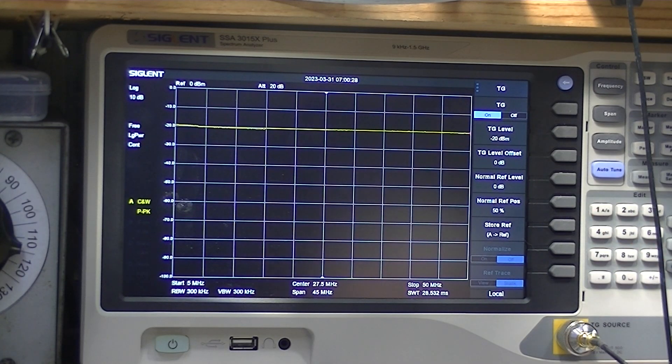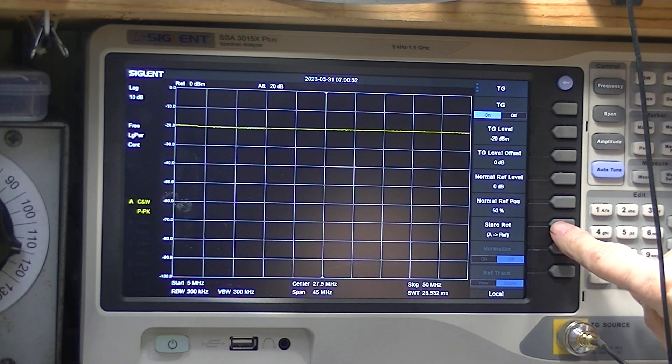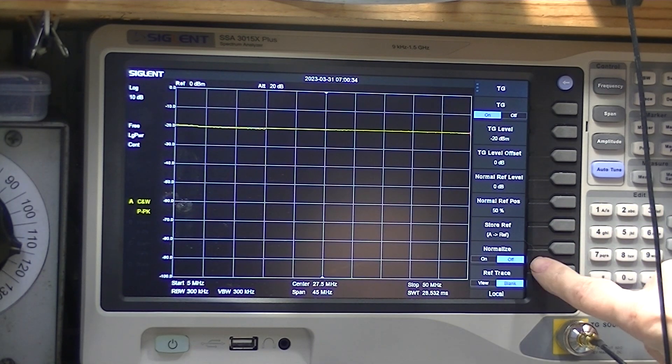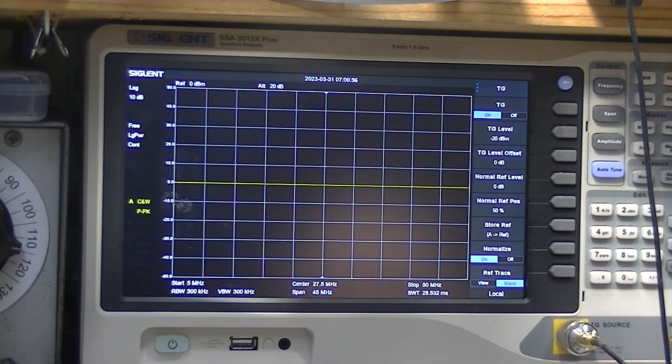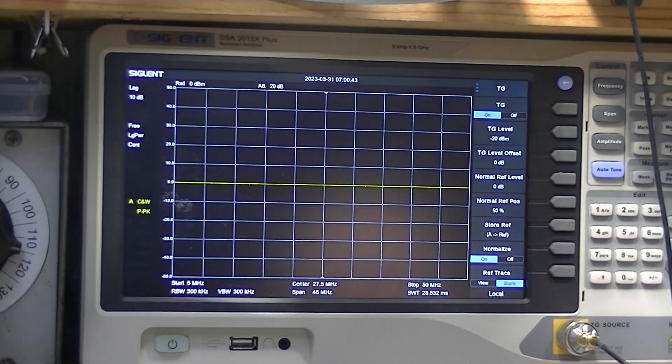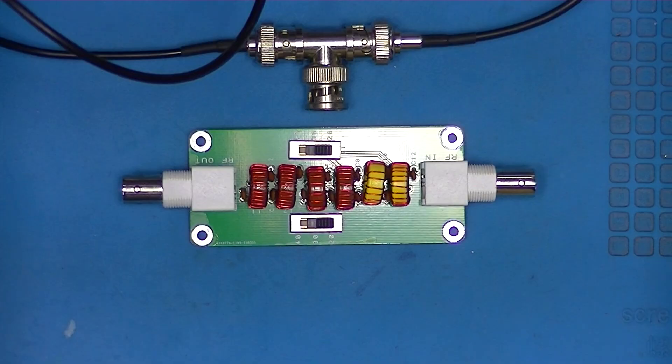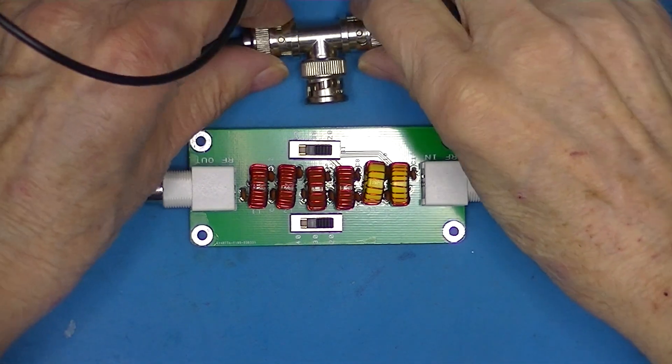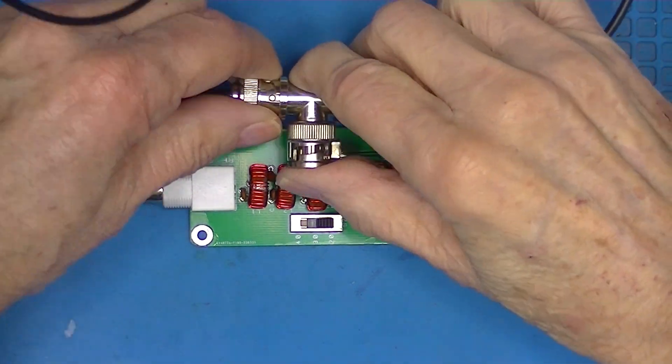I'm going to turn on the tracking generator. Now we've got the leads connected together, so I'm going to store that signal and then normalize it. What it does is straightens the line out perfectly flat. So now I'm going to insert the filter.